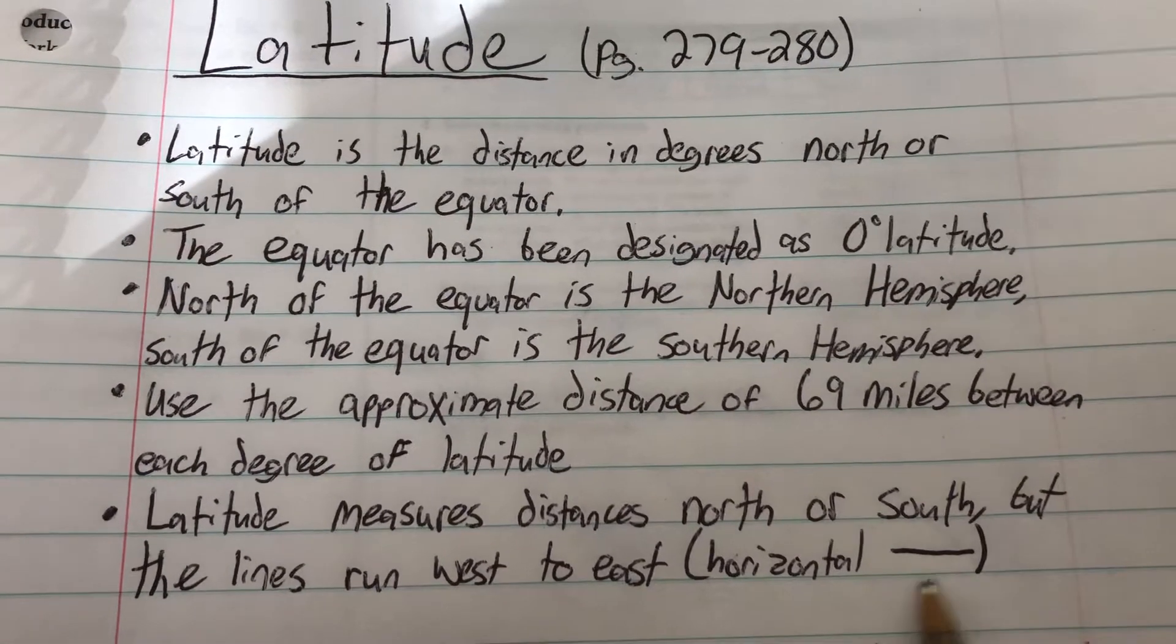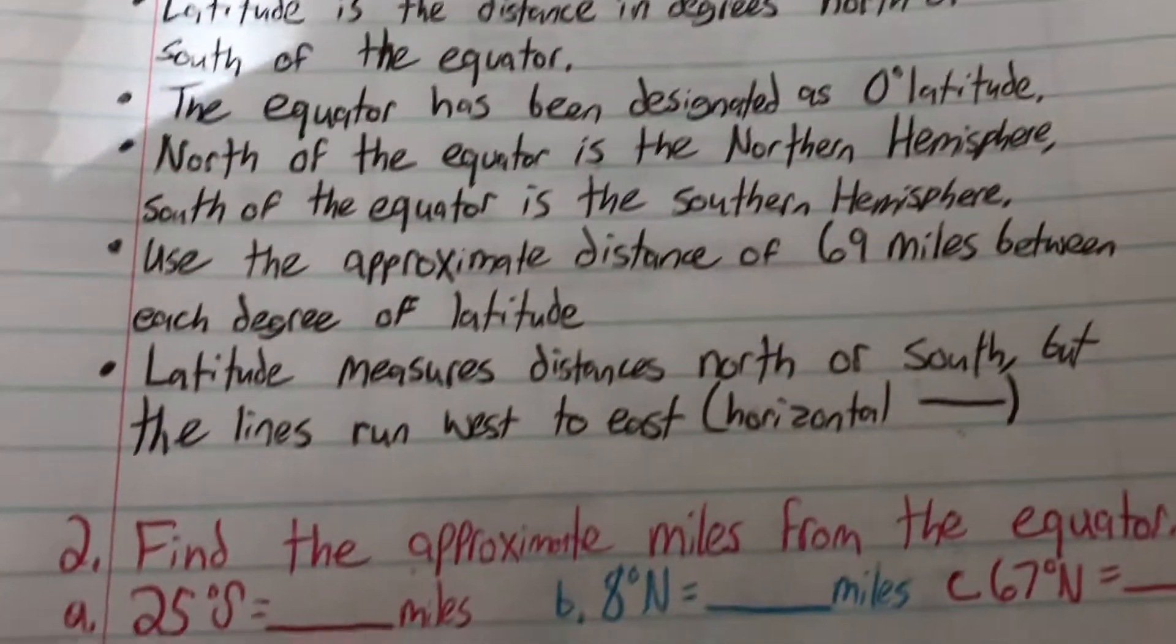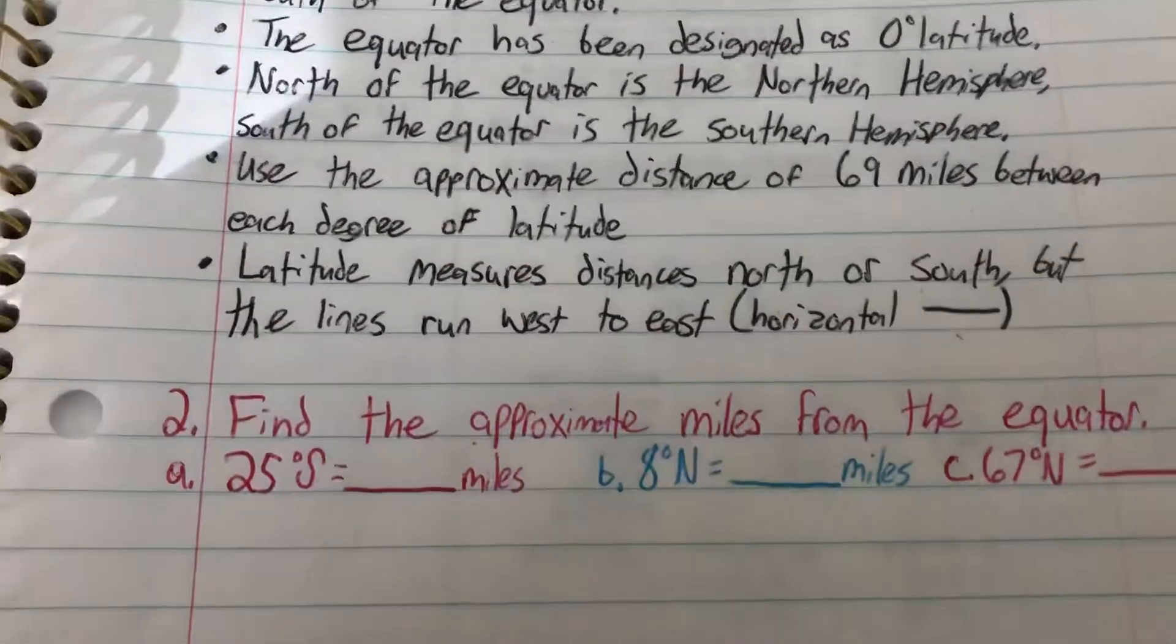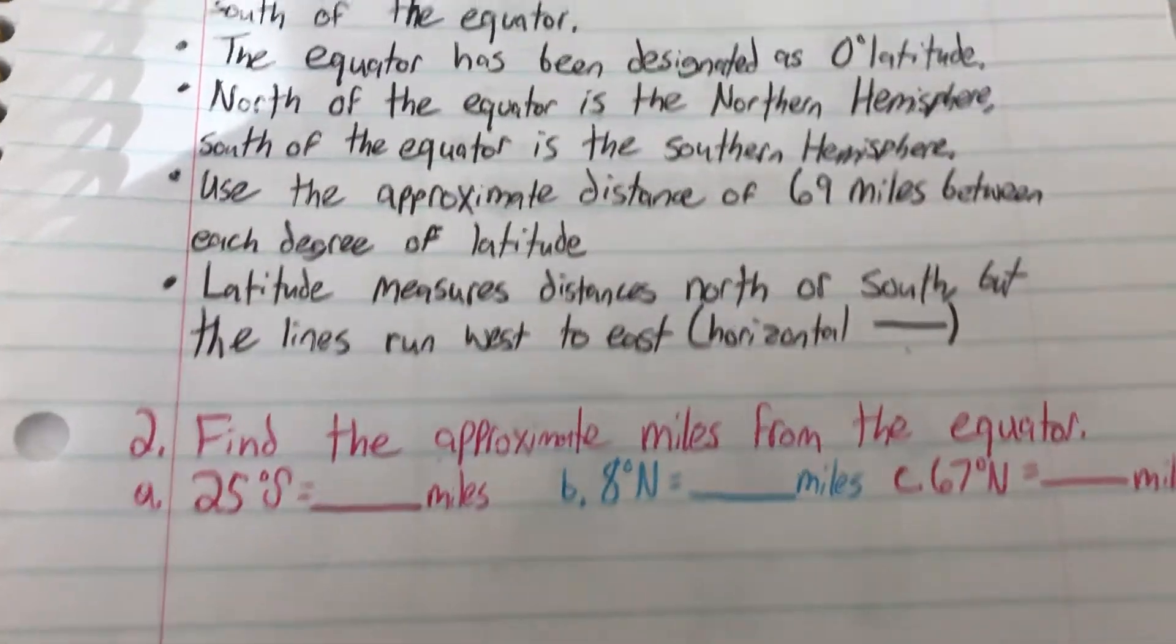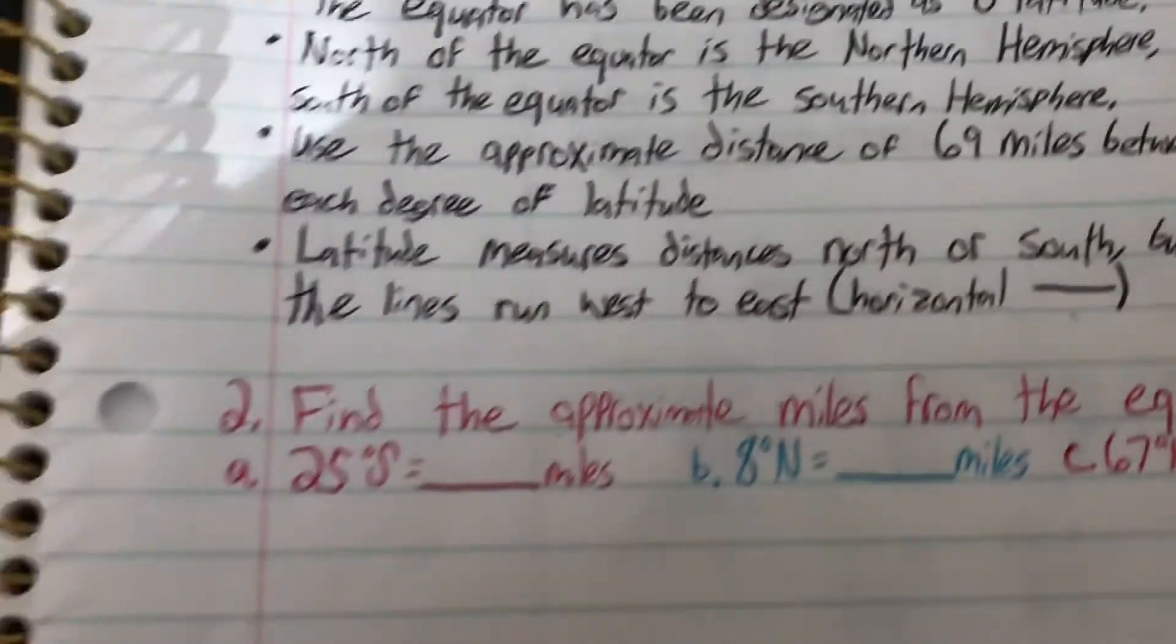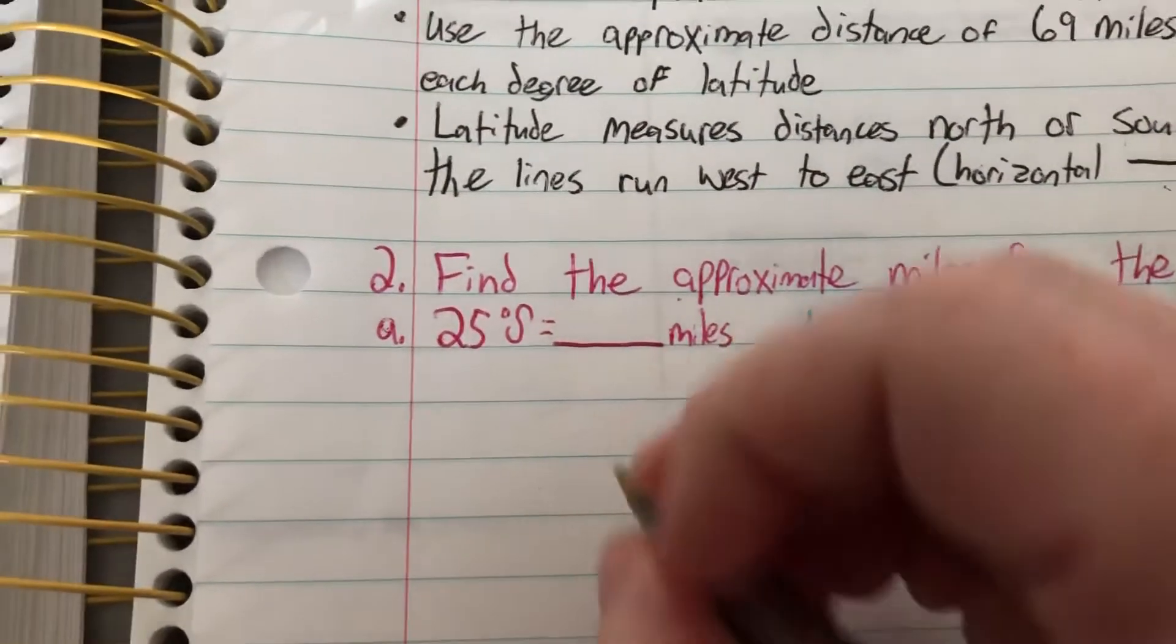They look like the line right here. They're not the up and down lines, they're the side to side lines. It wants us to find the approximate miles from the equator for each of these for number two. Well as said here that it is approximately 69 miles between each degree. So we would multiply these numbers by 69 to figure out how many miles it is.